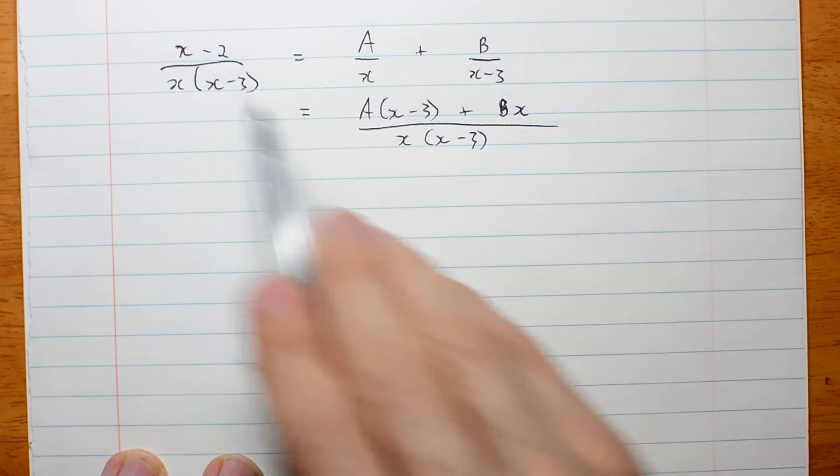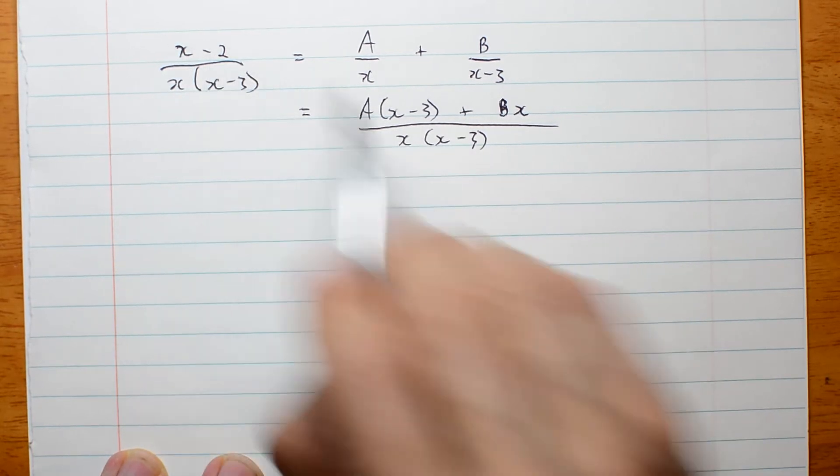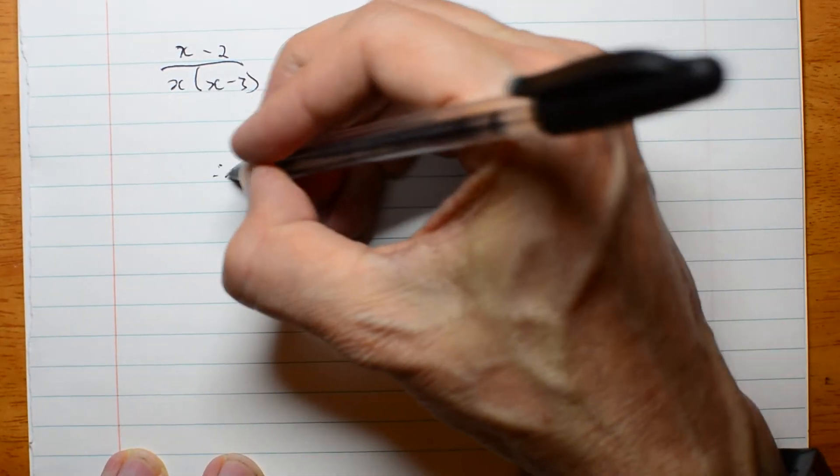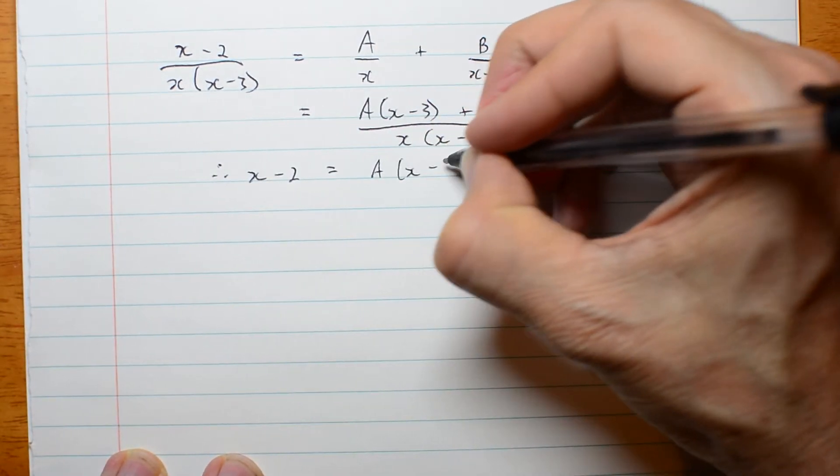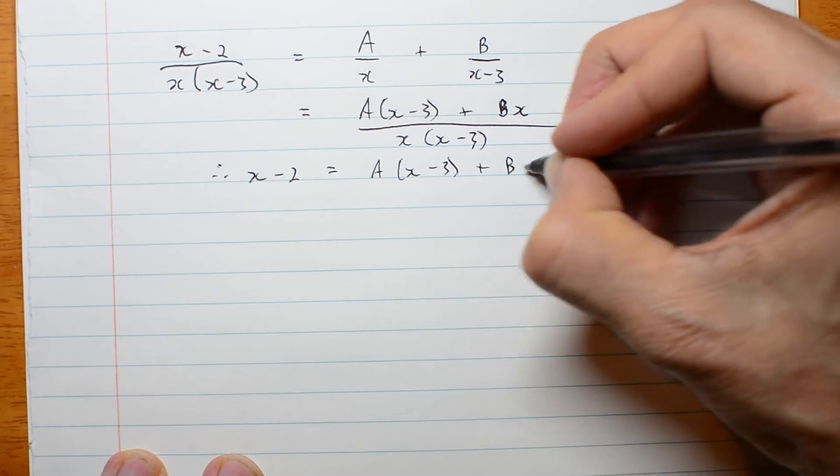a x minus 3 plus b x all over x x minus 3. Now I have the same denominators. Equate the numerators. Therefore, x minus 2 must equal a x minus 3 plus b x.